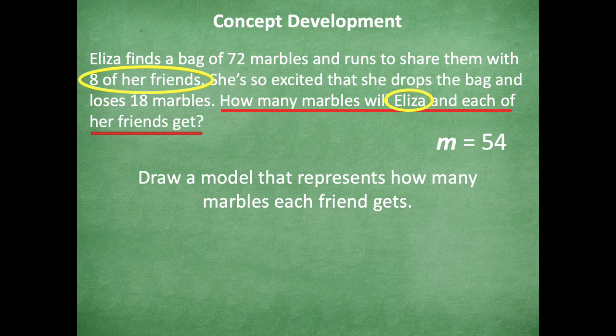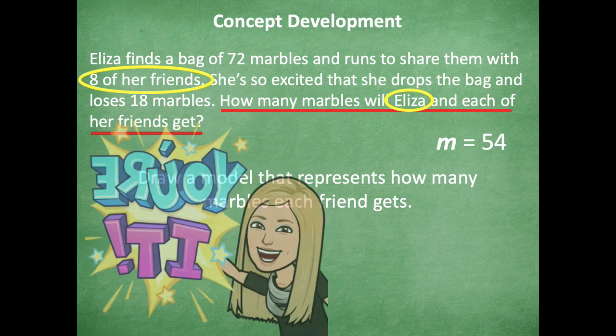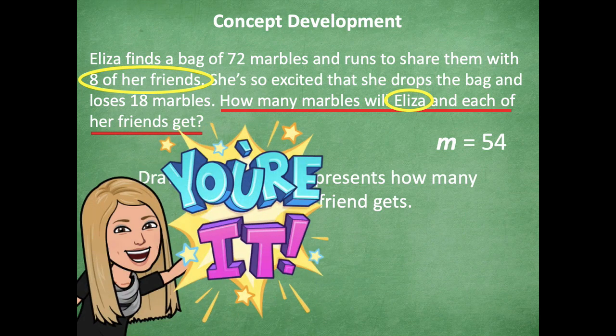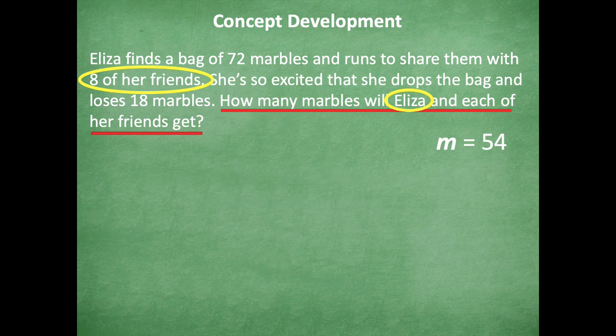We're going to draw a model showing how many marbles each friend gets. Pause the video and draw a tape diagram — we have 54 as our total, splitting it among nine friends. Model what that looks like on a tape diagram, then click play when you're ready to go over it together.